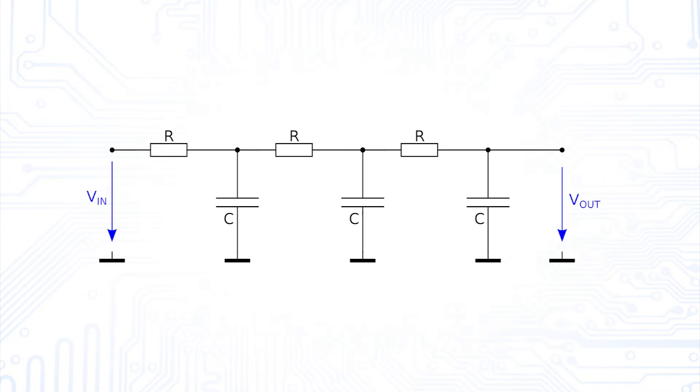In one of our last videos on filters, we created a higher-order filter by cascading several first-order filters and ran into a problem, namely that the individual filter stages have an influence on each other. We solved the problem by increasing the input impedance of each stage. However, we have already briefly mentioned that there is a more elegant solution to this problem using operational amplifiers.